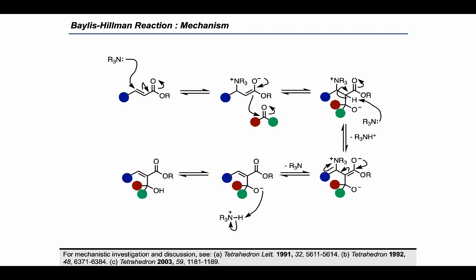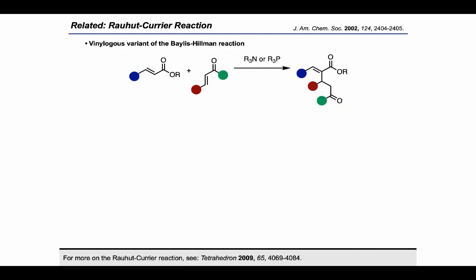Before checking out some synthetic applications, I want to pause and take a look at a related transformation — the Rawal-Currier reaction. This can be considered essentially a vinylogous variant of the Baylis-Hillman reaction, where instead of using a carbonyl or an amine as the electrophile, we're using a Michael acceptor.